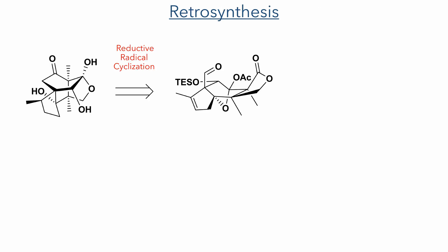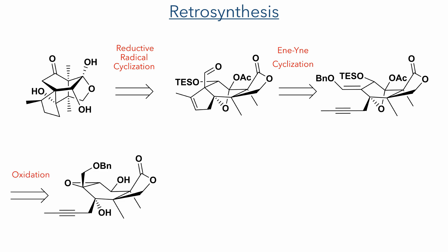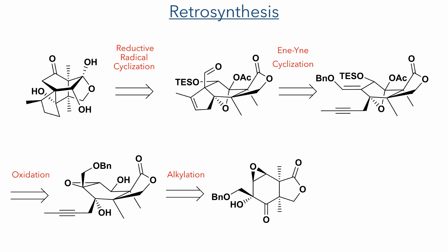Let's start with looking at the retrosynthesis. The authors sought to use a reductive radical cyclisation similar to a McMurray coupling to complete the final ring of the structure. An enyne cyclisation could be used to complete the five-membered all-carbon ring, leading back to an intermediate whose precursor could be obtained from oxidation state manipulations of a highly oxygenated alkyne-bearing intermediate. This alkyne could be installed through an alkylation reaction of a ketone using an intermediate derived from several oxidation steps of a previously reported bicyclic enone lactone.